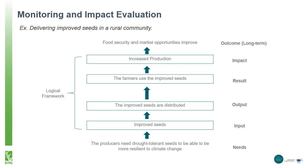However, attribution can be challenging since the yield might have improved due to other factors — for example, additional government support for irrigation infrastructure during that year. We would want to control for these other factors so that we can know for sure if the improved yields were a result of the improved seeds provided by the NGO. For this reason, we use impact evaluation. Monitoring can be repeated measurements or monitoring of the process, such as monitoring receipt and use of the seeds, but impact evaluation is looking towards the impact of an intervention.